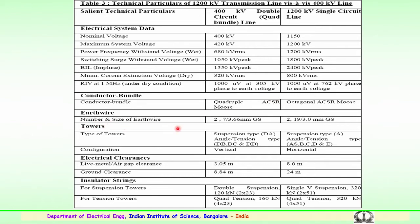For earth wires: 400 kV typically uses 2 earth wires with 7 strands of 3.6 mm dia galvanized steel. For 1200 kV, 2 earth wires with 19 strands of 3 mm dia galvanized steel are used. In terms of tower types: for 400 kV, DA is used for suspension; DB, DC, and DD are used for tension. For 1200 kV, tower type A is used for suspension, and types A, S, B, C, D, and E are employed for tension. Configuration: 400 kV uses vertical configuration; 1200 kV uses horizontal configuration.